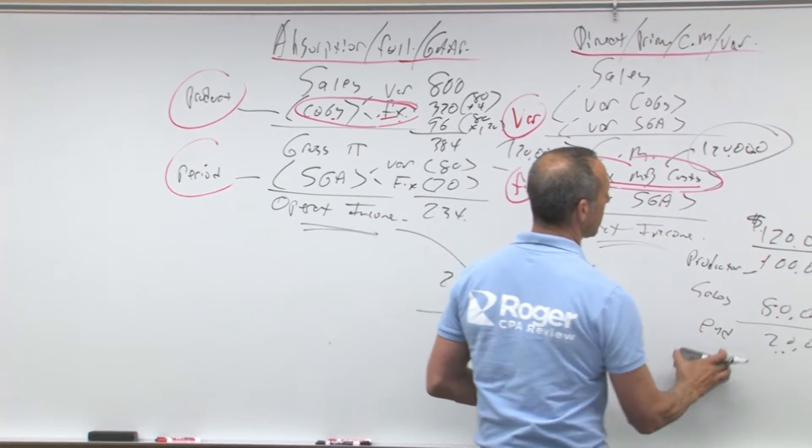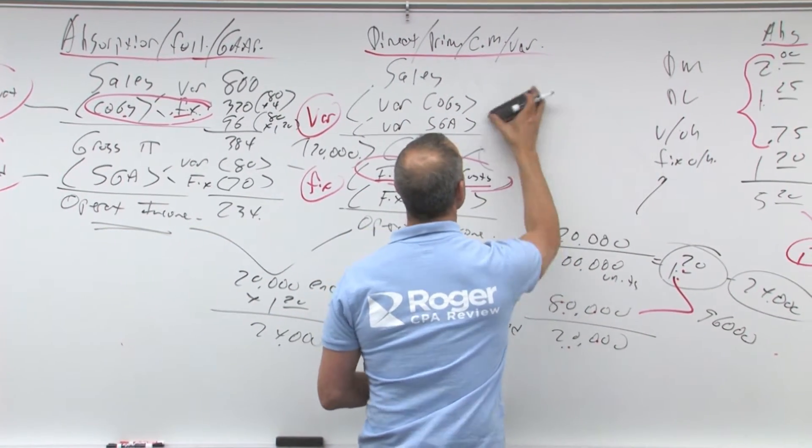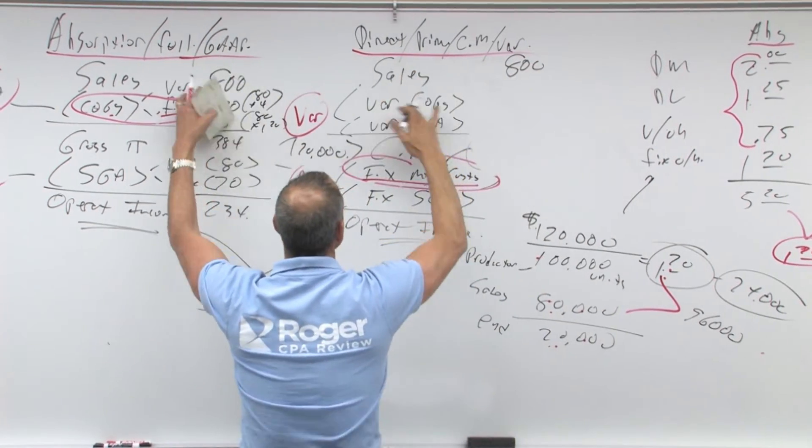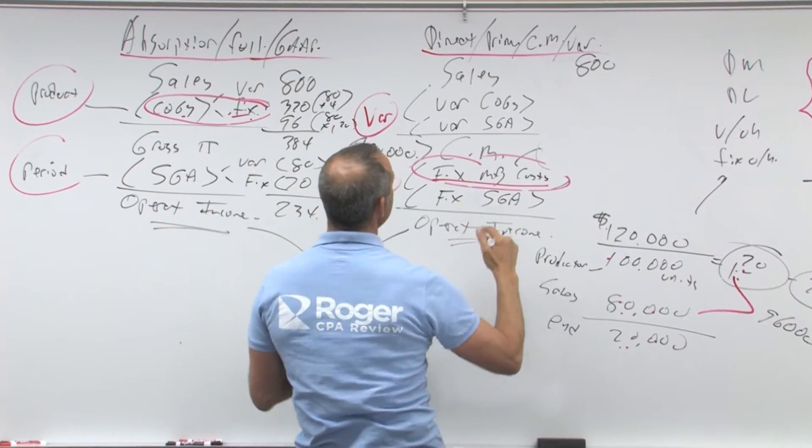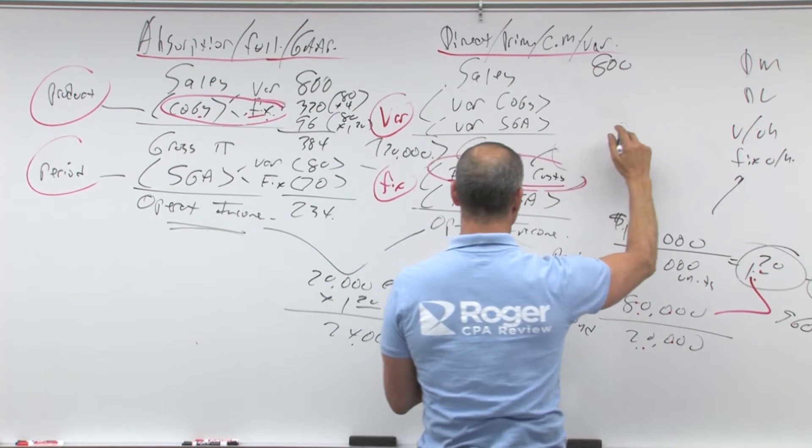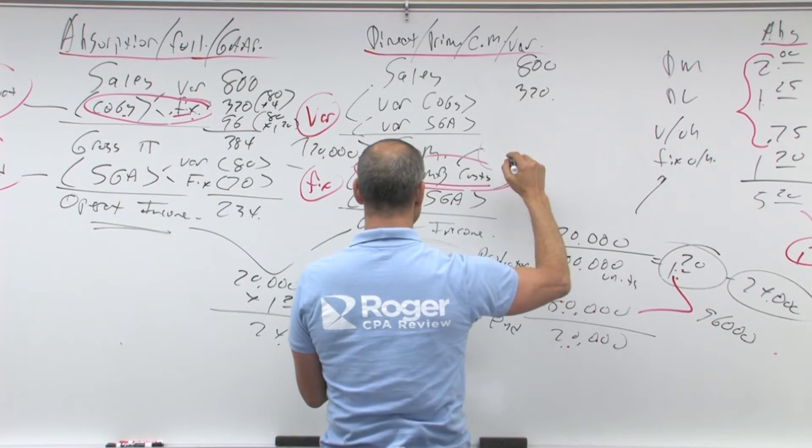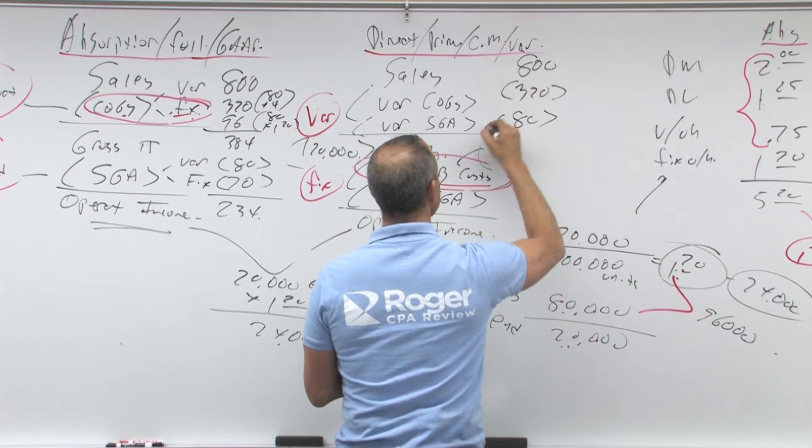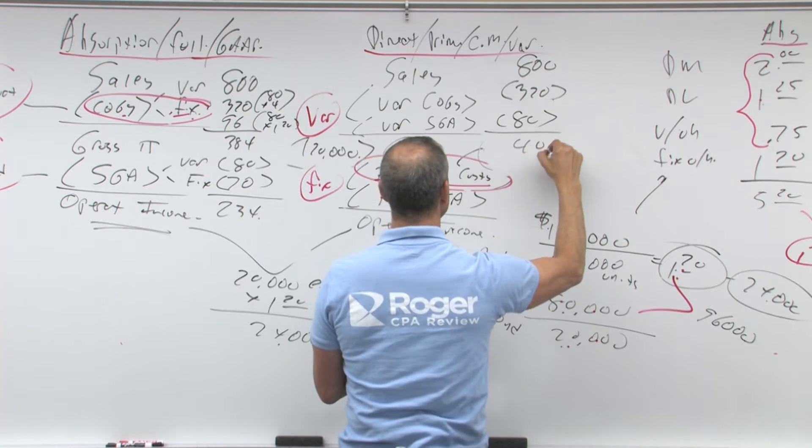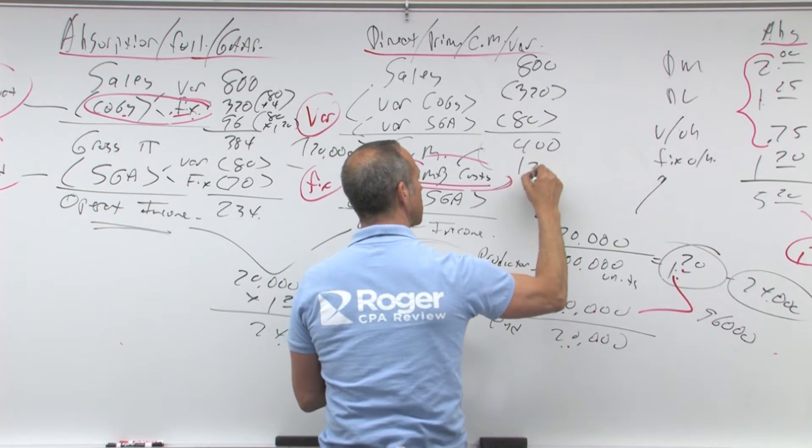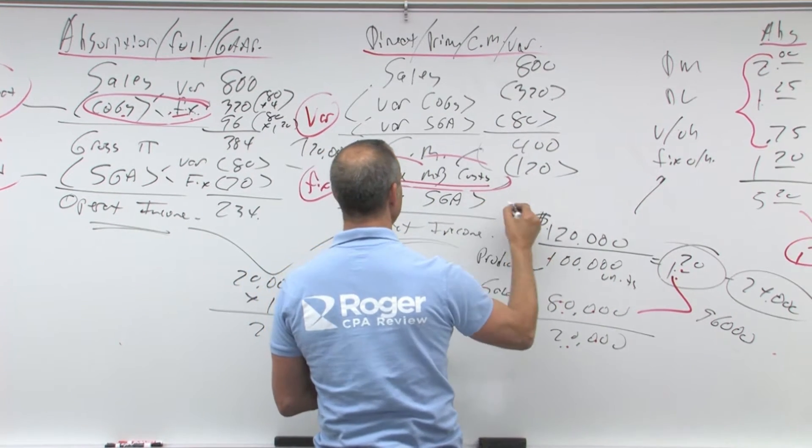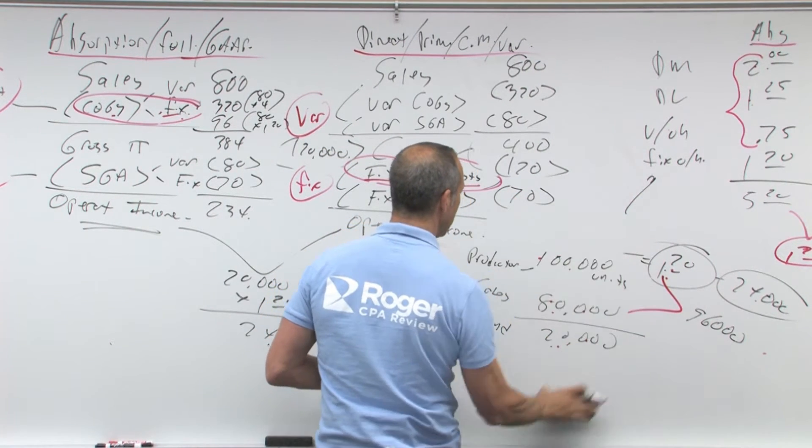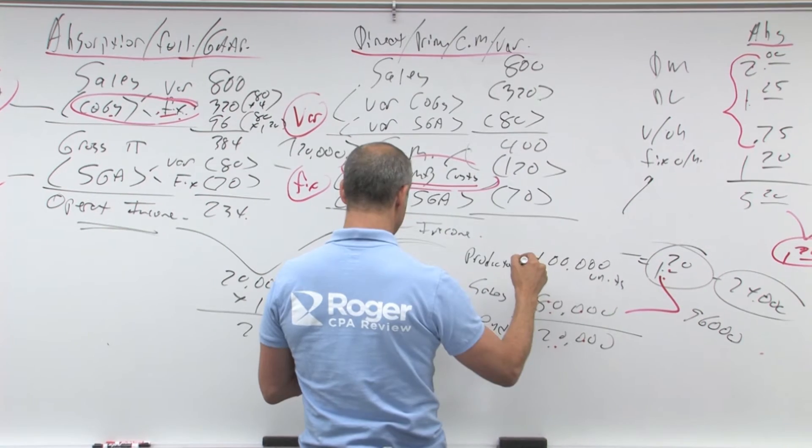Let's do the same question over here. I've got sales will be the same, 800. Now remember, every number's gonna be the same except these two. So my variable costs of goods sold are gonna be still 320. My variable SG&A is gonna be 80. That gives me 400. My fixed manufacturing is 120, that's different. My fixed SG&A is 70. That gives me 210.